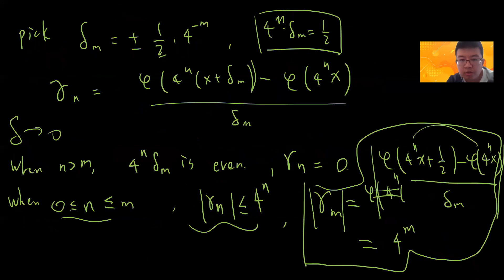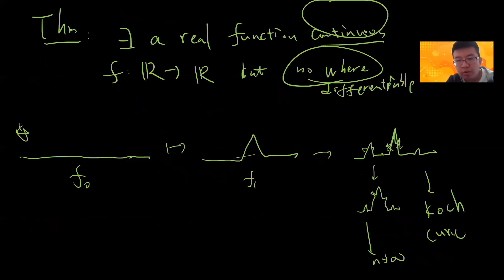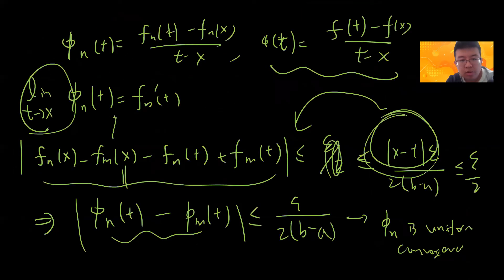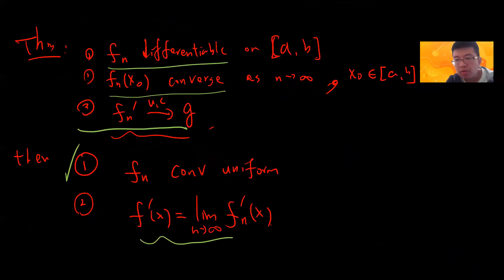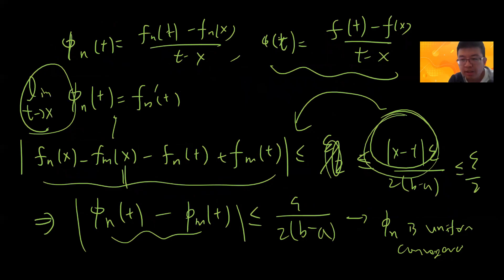So yeah, that's it. You can use uniform convergence to construct a function which is continuous but nowhere differentiable. Subscribe to my channel. Next video I plan to talk about equicontinuous families and the proof of the Arzelà–Ascoli theorem, which is very interesting. See you guys next video.